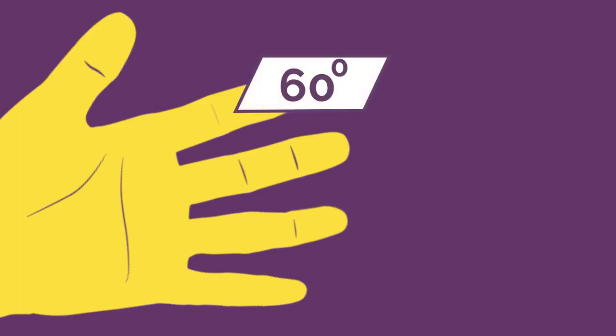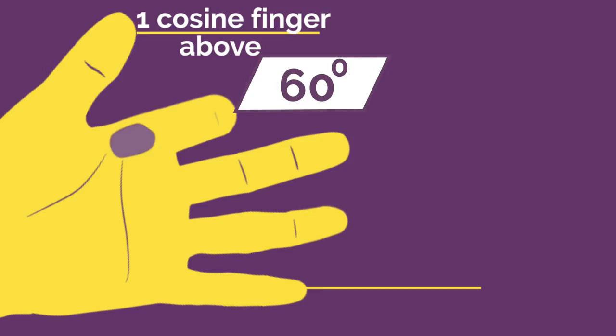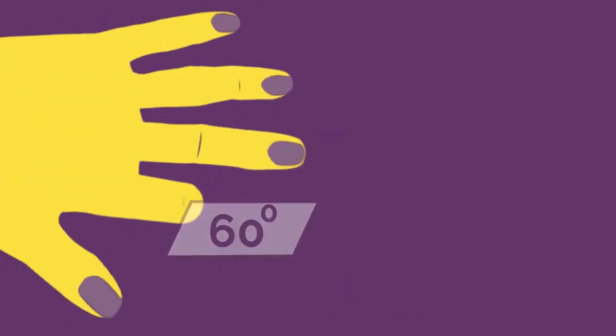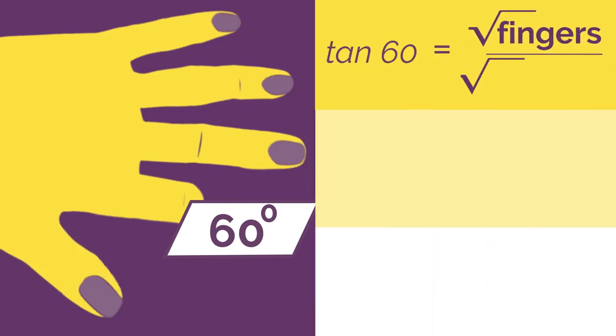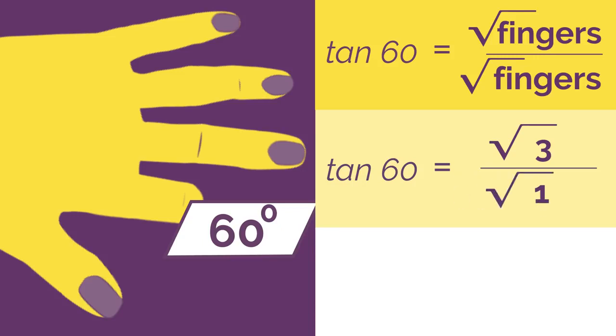So let's find tan 60. Bend down our 60 degree finger and we've got one cosine finger above and three sine fingers below. For tan, we flip our hand over and we have three sine fingers above and the one cosine finger below. So tan is square root fingers, so square root 3 over square root 1, which simplifies to root 3.